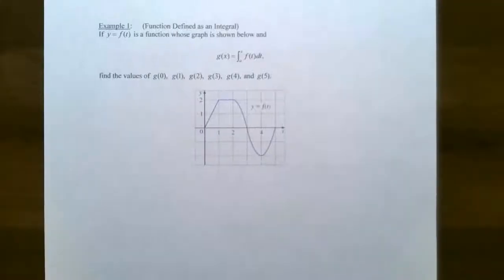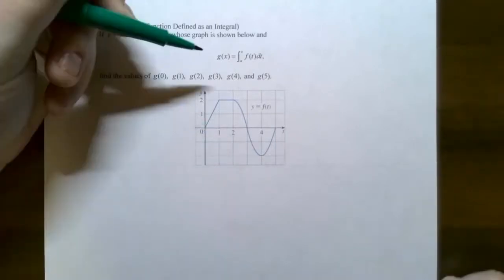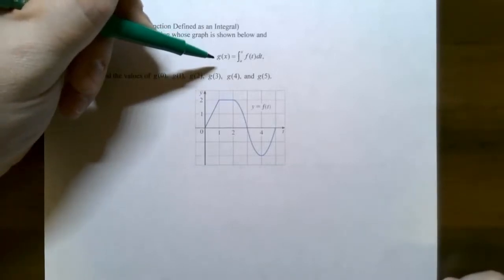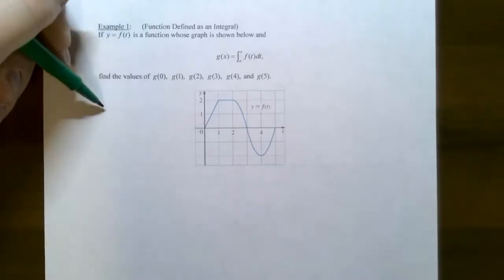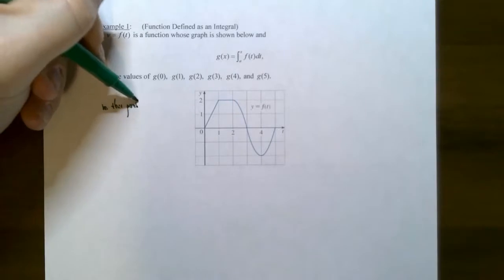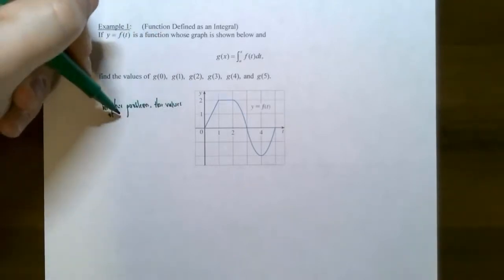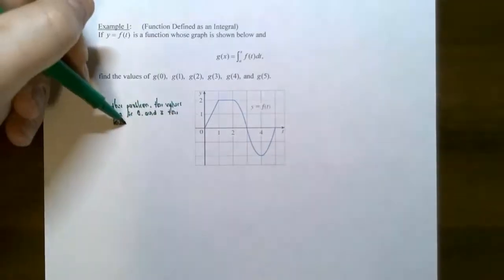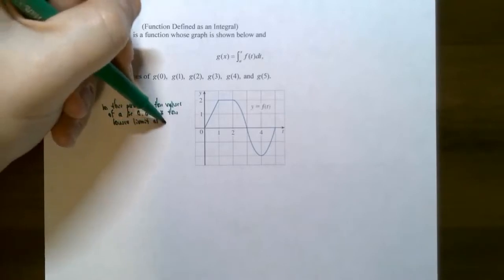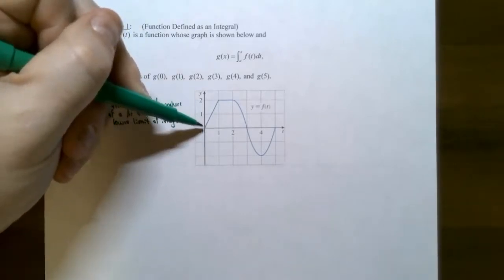To illustrate how the Fundamental Theorem of Calculus works with a function defined as a definite integral, we'll do Example 1. Let f of t be a continuous function whose graph is given. Define g of x to be the definite integral from a to x of f of t dt. From the graph, the value of a is zero, which is the lower limit of integration — so the area for f of t starts at t equals zero.